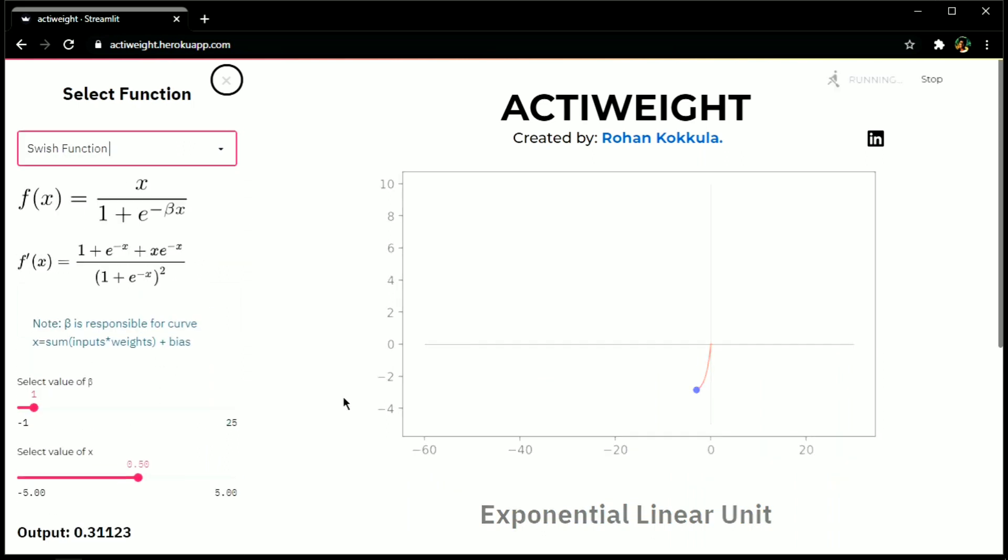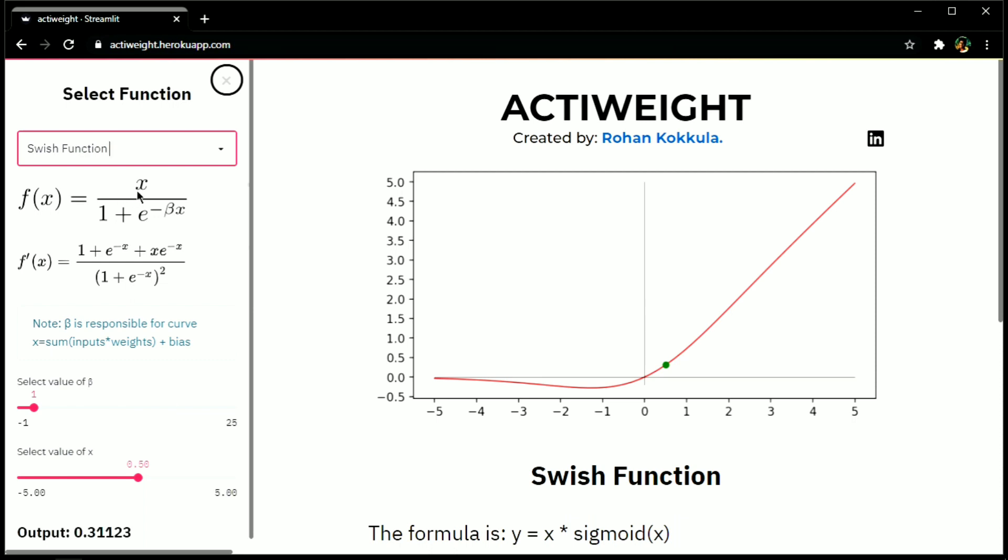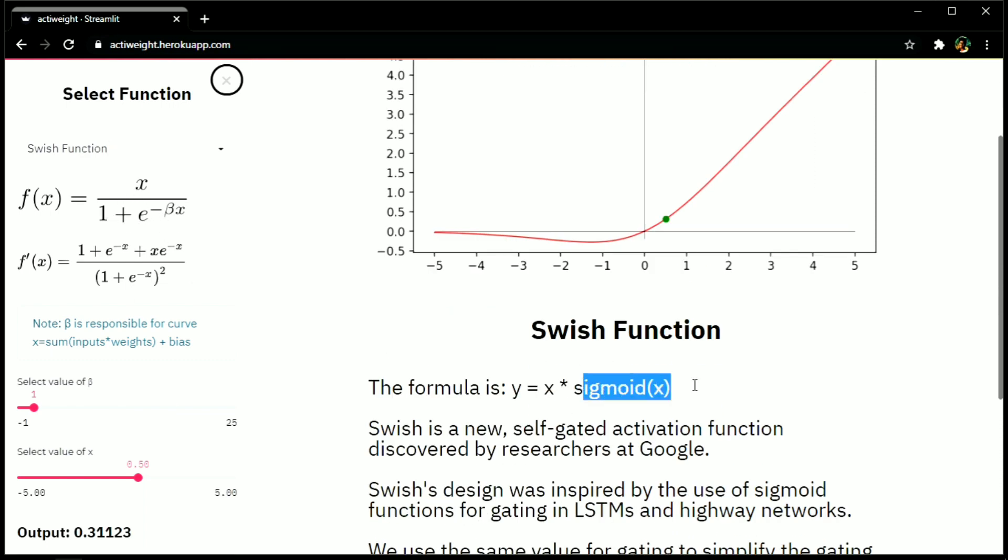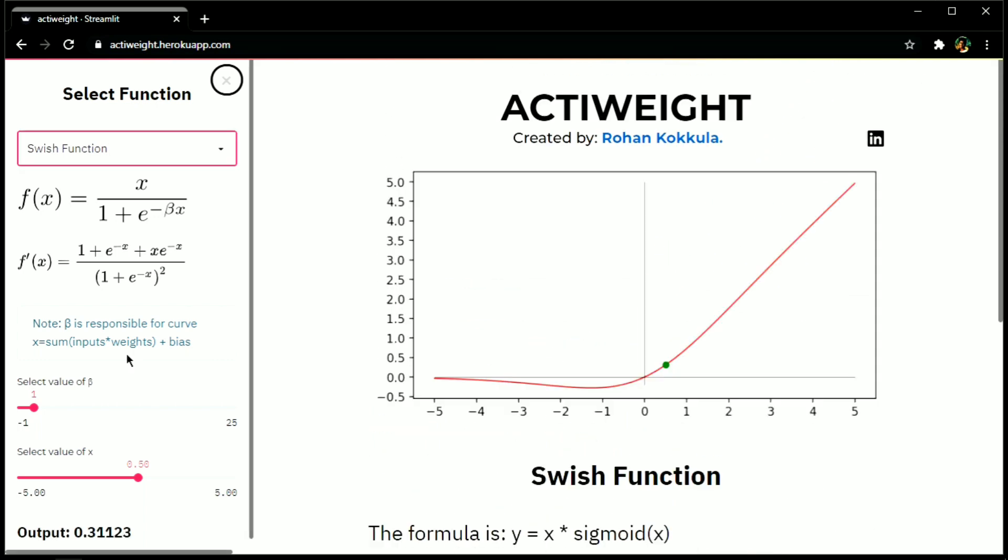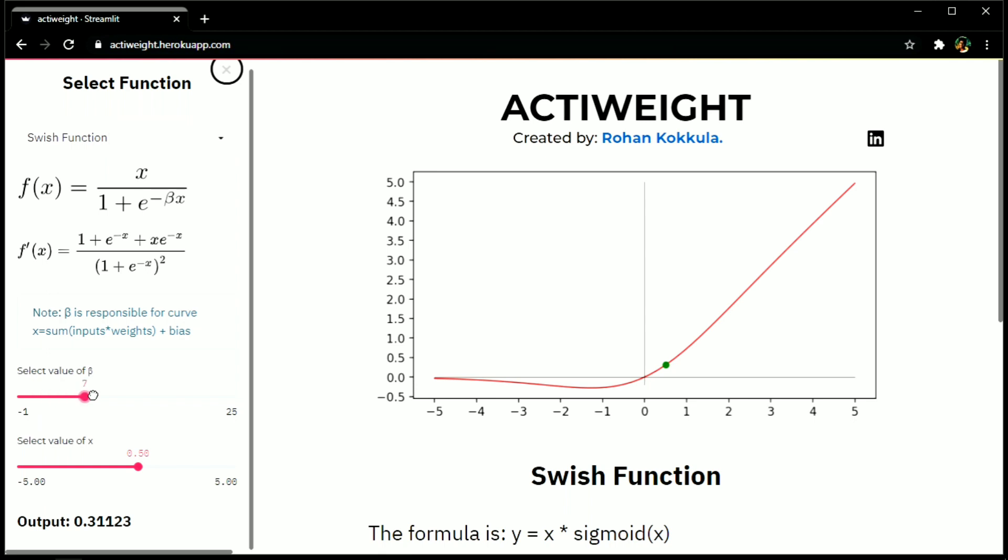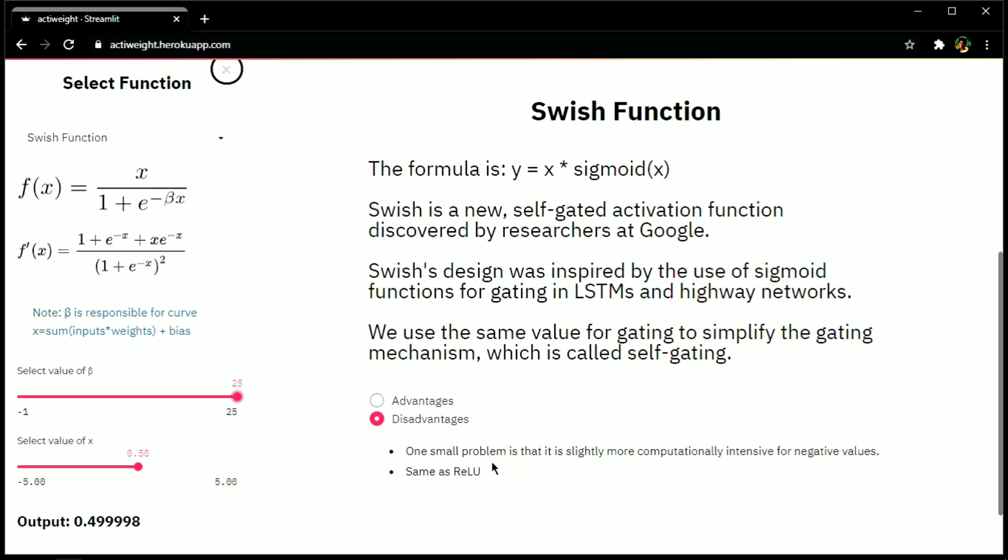On moving further, we have swish function. This is simply x multiplied by sigmoid of x. This function was released by researchers at Google Brain in 2017. If the value of beta is way too high, then it becomes the replica of relu function.